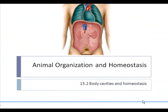In the previous section, we looked at different kinds of cells that form different kinds of tissues. Now the next level of organization is when different tissues are grouped together to form what is called an organ.